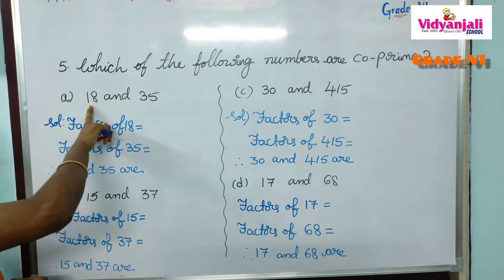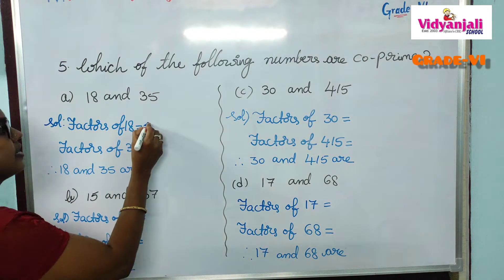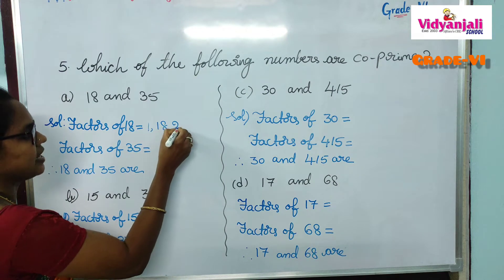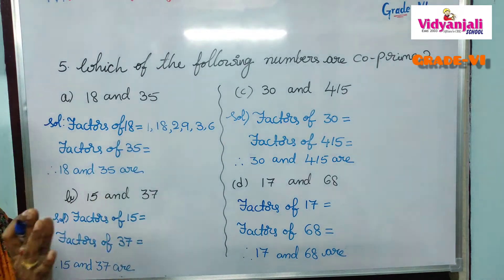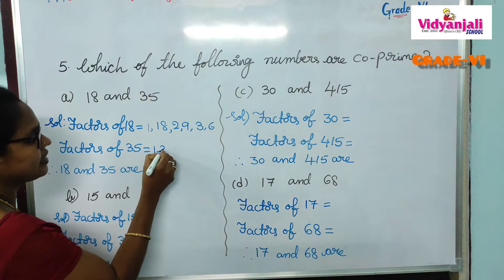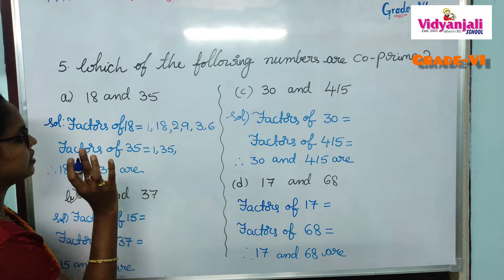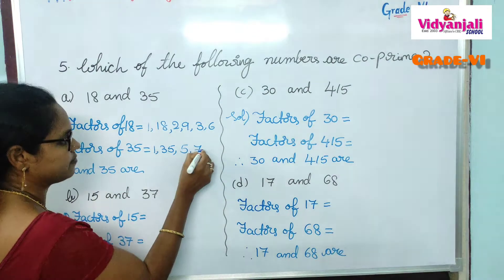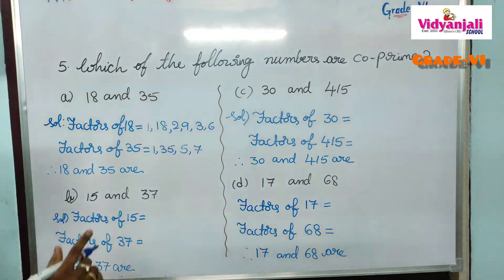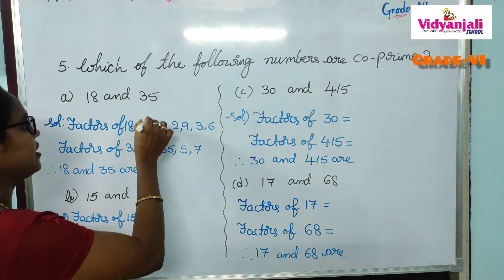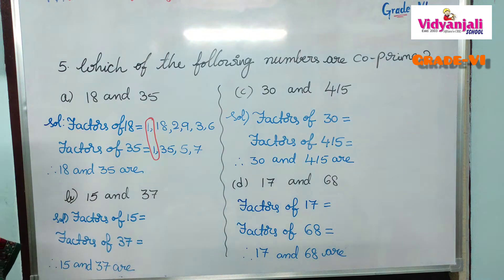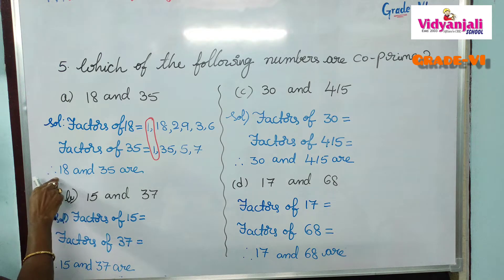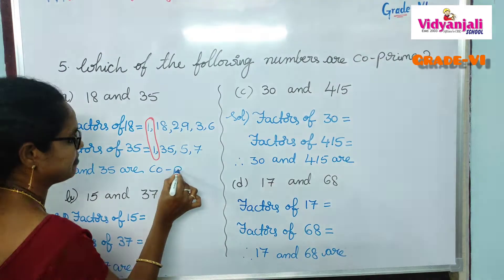First pair: 18 and 35. Factors of 18 are 1, 2, 3, 6, 9, and 18. Factors of 35: we check 2, 3, 4 — they don't divide 35. In the 5 times table: 5 and 7 give 35. So factors of 35 are 1, 5, 7, and 35. The only common factor of 18 and 35 is 1. Therefore, 18 and 35 are co-primes.